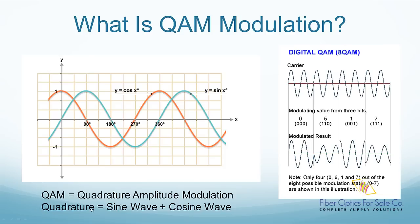Quadrature means that two carrier waves are being used. One sine wave and one cosine wave. These two waves are out-of-phase with each other by 90 degrees. This is called Quadrature.